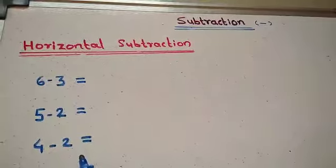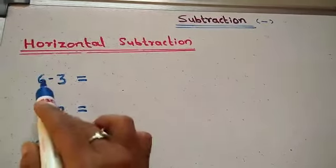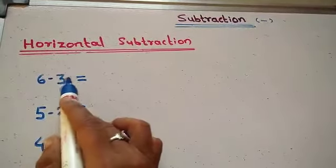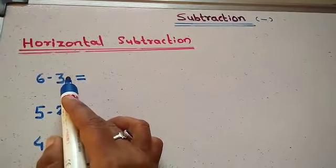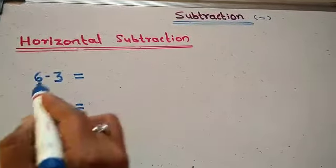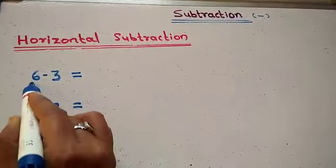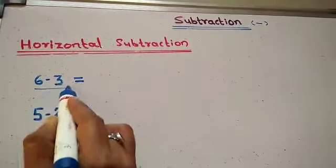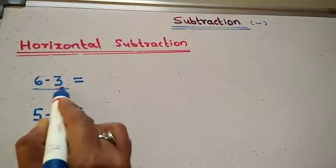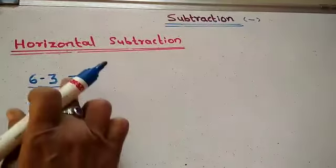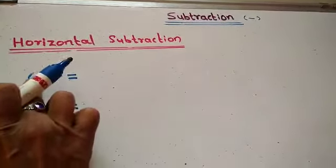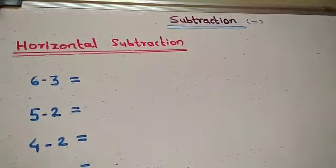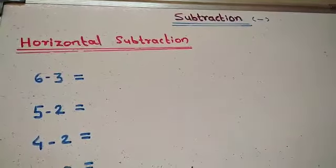Now let's solve this example: 6 minus 3. The numbers are arranged in a straight line — this is called horizontal subtraction.